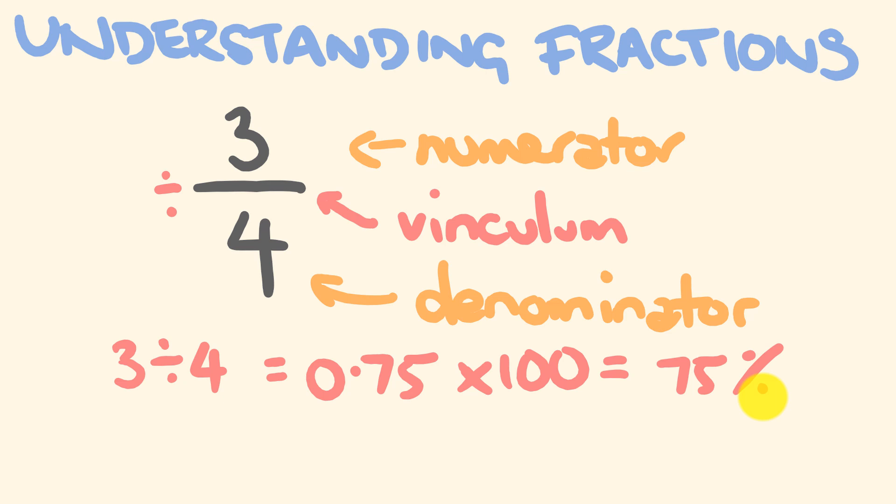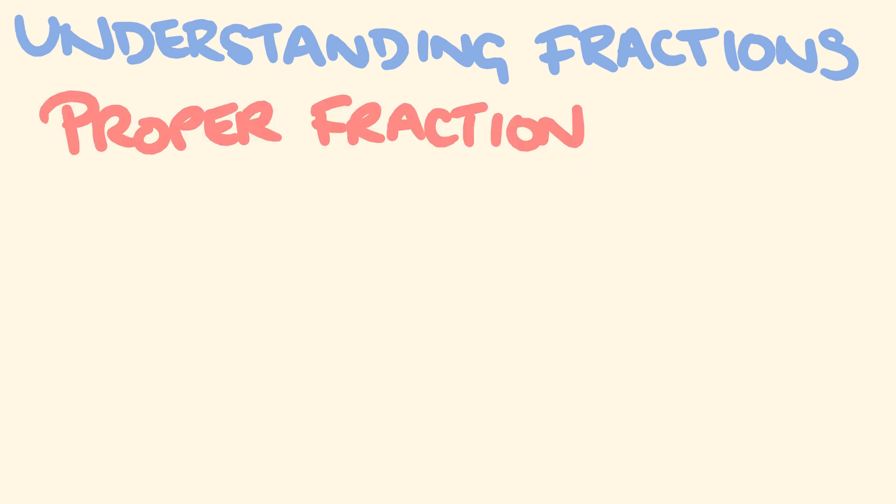So what types of fractions do we have? Now I guess a proper fraction is what you think of as a normal fraction, where we have the numerator, the top number, being bigger than the denominator. So the number we had before, three quarters, was an example of a proper fraction. Half would be an example of a proper fraction or say something like three fifths. These are all examples of proper fractions.